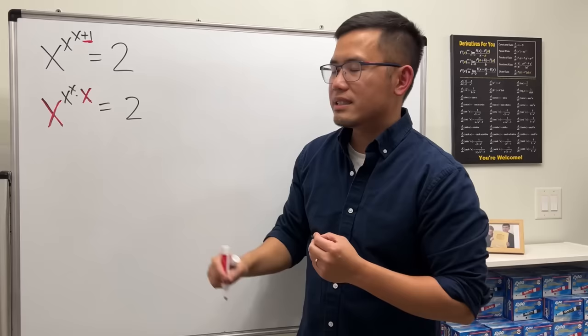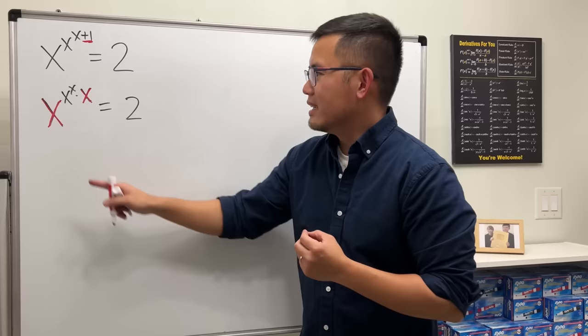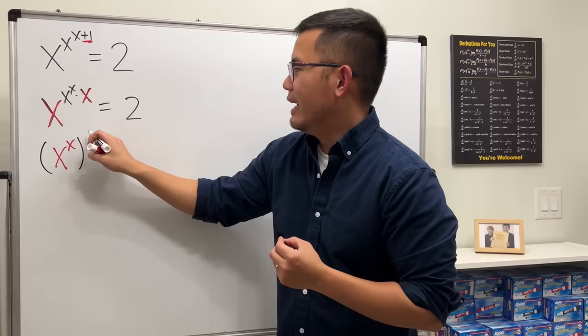Now what? Use the rule of exponent again. I'm going to put them together and write x to the x power first, and then raise to the x to the x power, and that is equal to 2.